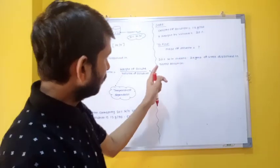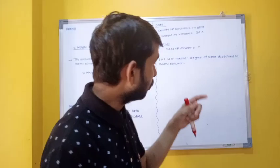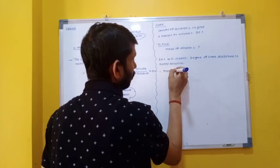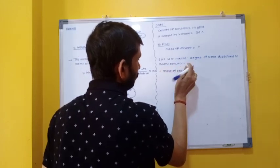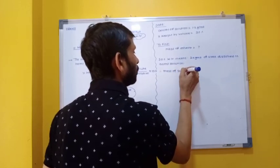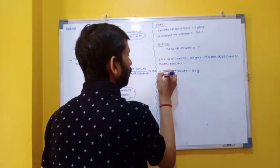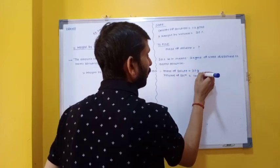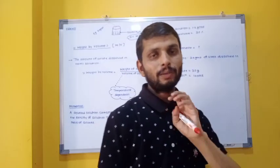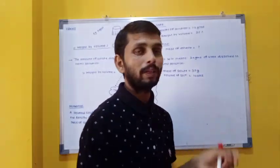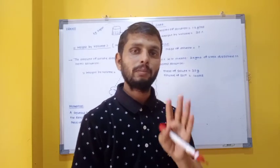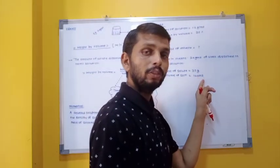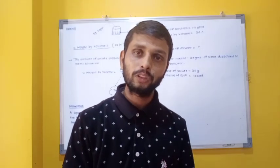From 30% W/V, volume of solution is 100 ml. Some students subtract 30 from 100 to get 70 grams as solvent — but this is wrong, because 100 is in ml and 30 is in grams; units are not the same. So first you need to convert ml to grams. That is why density was given. Using density: M = D × V = 1.2 × 100 = 120 grams. This is the mass of the solution.